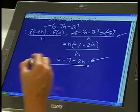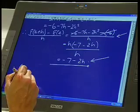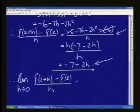Okay. I've got my average gradient and now I can take my limit. Limit when h approaches 0 of f of 2 plus h minus f of 2 over h is nothing other than negative 7. Because that h becomes 0.